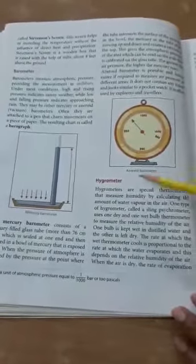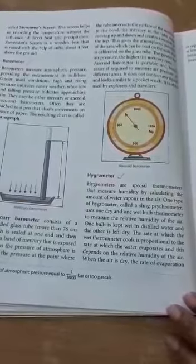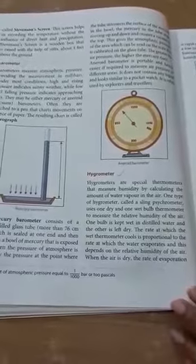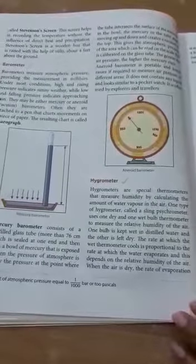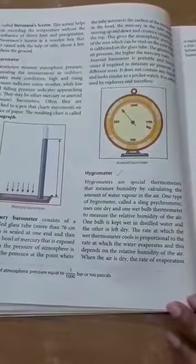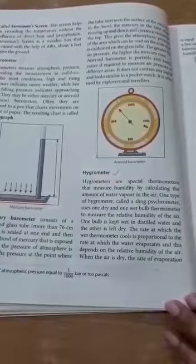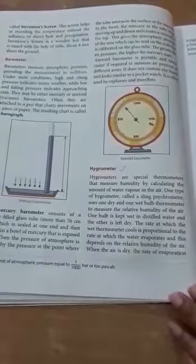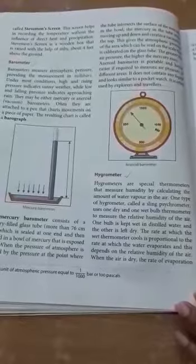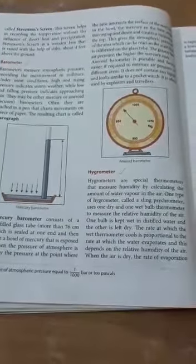Next one is hygrometer. Hygrometers are special thermometers that measure humidity by calculating the amount of water vapor present in the air. One type of hygrometer called a sling psychrometer uses one dry and one wet bulb thermometer to measure the relative humidity of the air.